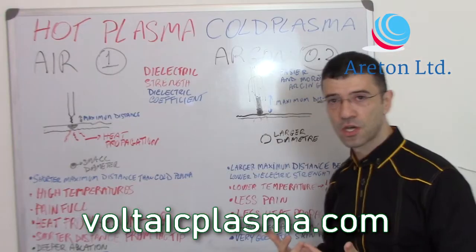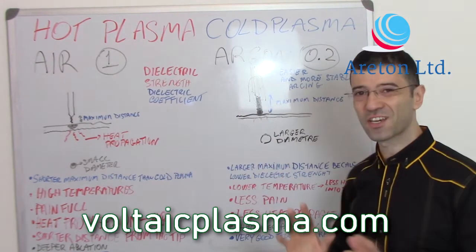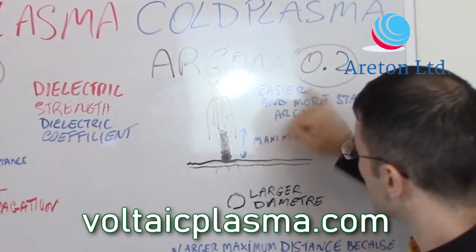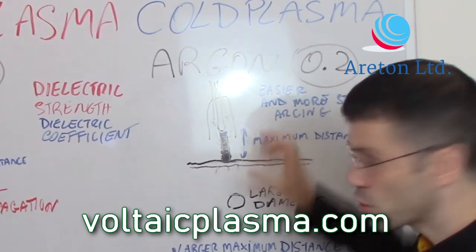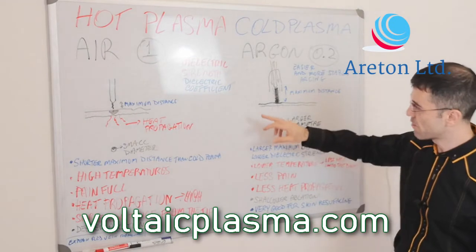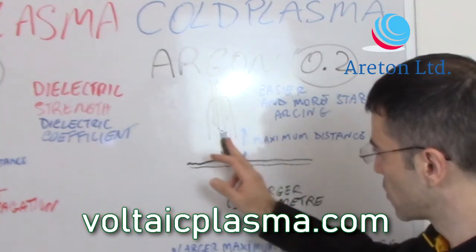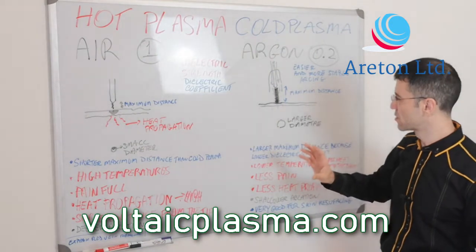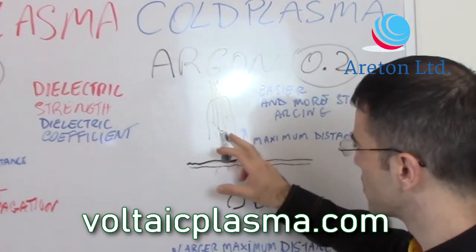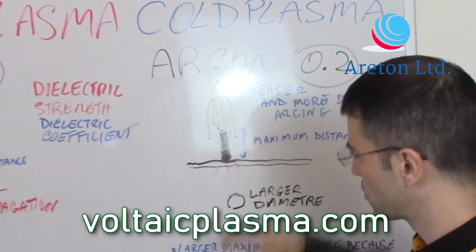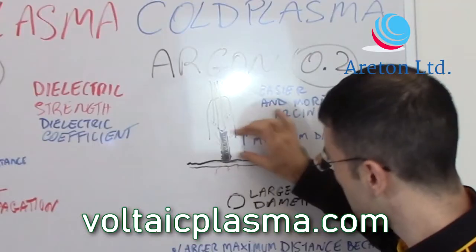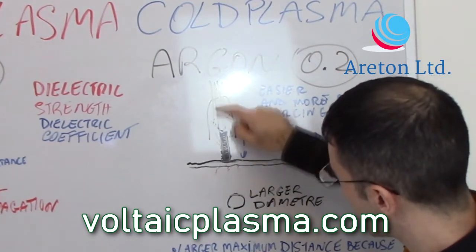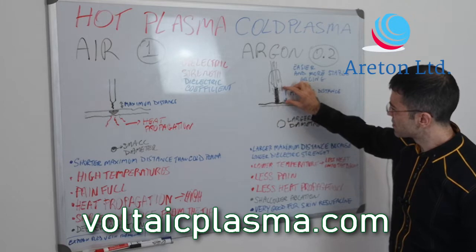What is the advantage of using argon or cold plasma? And why is it called cold plasma? Argon has got a low dielectric coefficient, so it makes it much easier. You do require a lot less energy to convert that argon from an insulator into a conductor. So that ionisation of the gas — which is called plasma — is much easier to take place. You require normally less voltage, lower frequency, and less energy in order to cause it. Also, the distance between the tip of the electrode is much larger. If we imagine argon flowing through with the electrode, that distance is much larger.